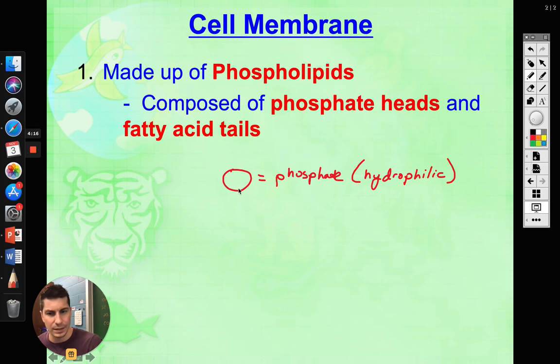We had our head, which was a phosphate, and it was hydrophilic. And then we had our two fatty acid tails coming from each one.